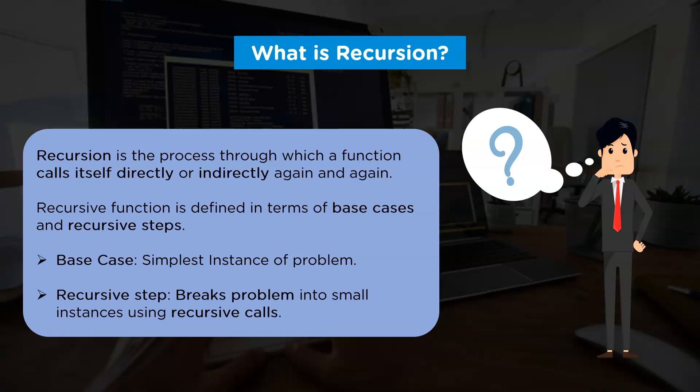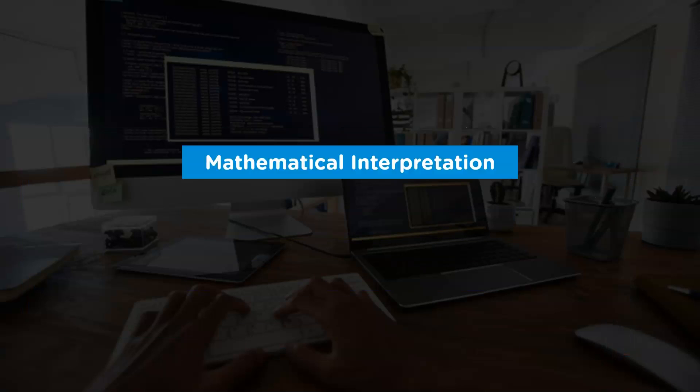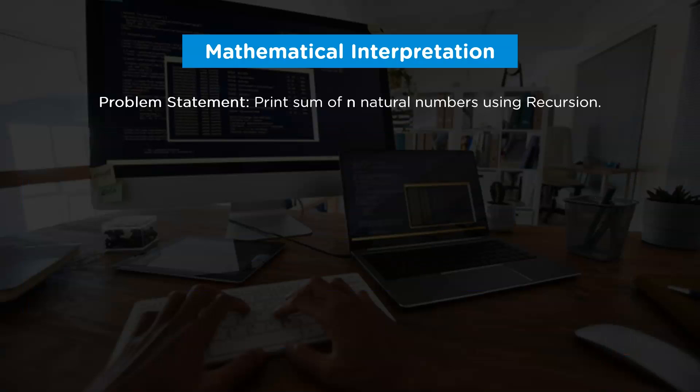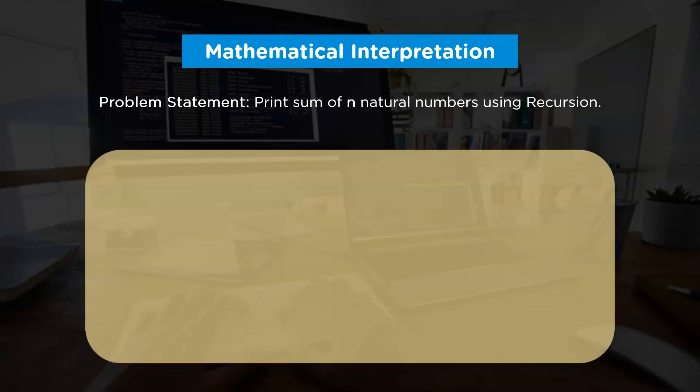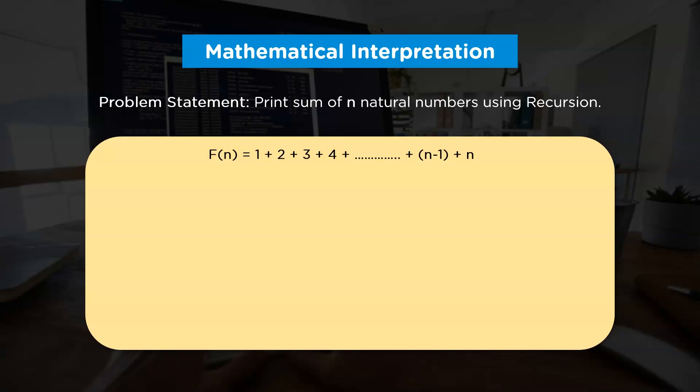To understand this breakdown, let's have a look at the mathematical aspect of recursion. Suppose you have to formulate a mathematical function for computing the sum of n natural numbers. That means the function that you're going to create must calculate the summation of all natural numbers in the range 0 to n. Mathematically, it can be represented as summation of all numbers from k equals 0 to k equals n.